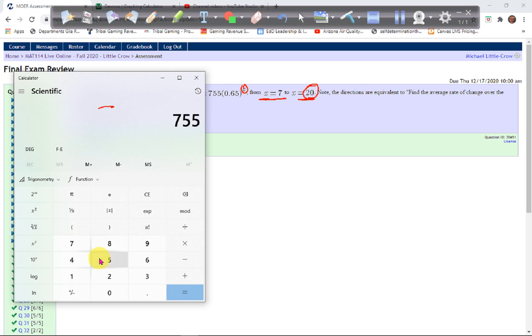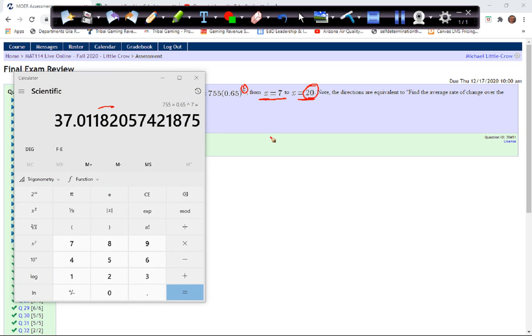So let's go ahead and start with that. 755 times 0.65 raised to the 7th power. So I get 7 comma 37.0118.